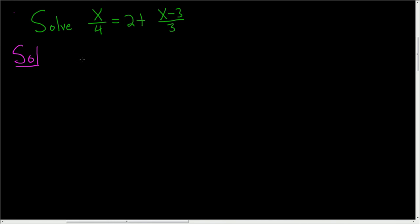In this case, the least common denominator is 12, so we'll multiply both sides by 12. So we have 12 times x over 4 equals 12 times all of this, 2 plus x minus 3 divided by 3.